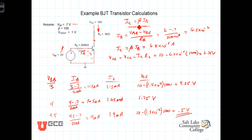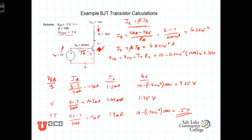In the saturation region, I sub C is no longer equal to beta times I sub B. In fact, I sub C is no longer a function of I sub B or V_BE. At this point, the transistor is wide open — it's conducting as much as it can. The voltage from the collector to the emitter is the saturation voltage of about 0.1 volts. Increases in V_BB will no longer increase the current through the transistor. The current is now determined by the source voltage, the size of this resistor, and the saturation voltage across the transistor, which we consider constant across a very wide range.